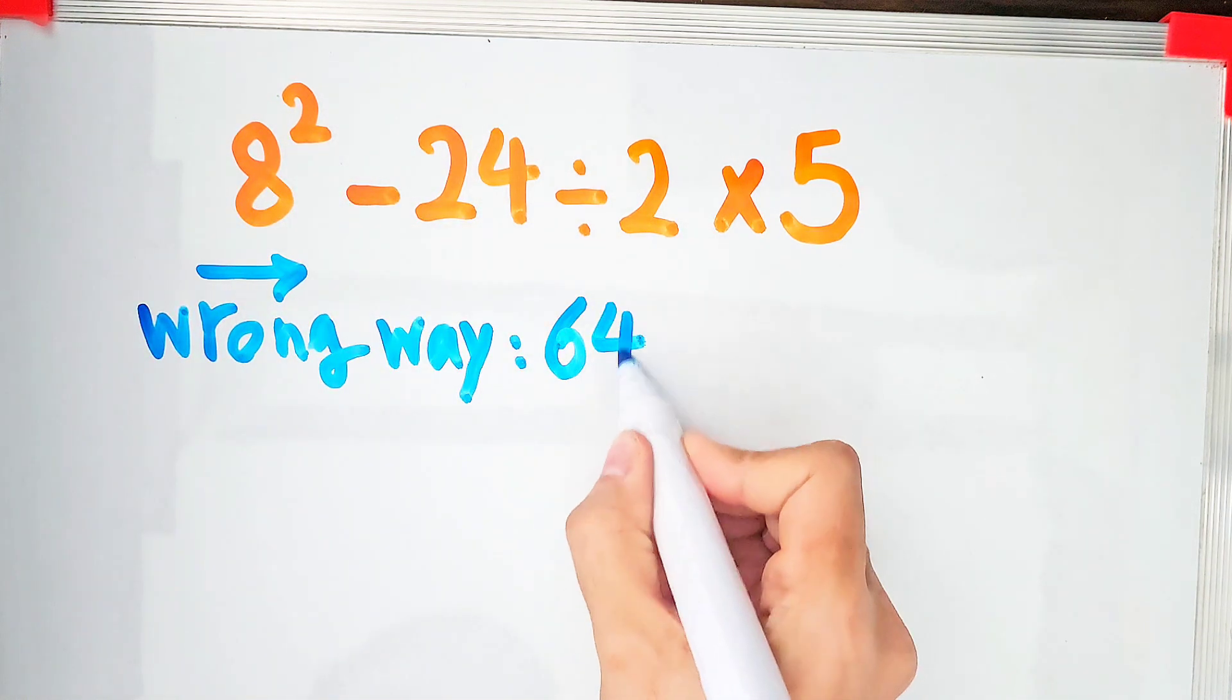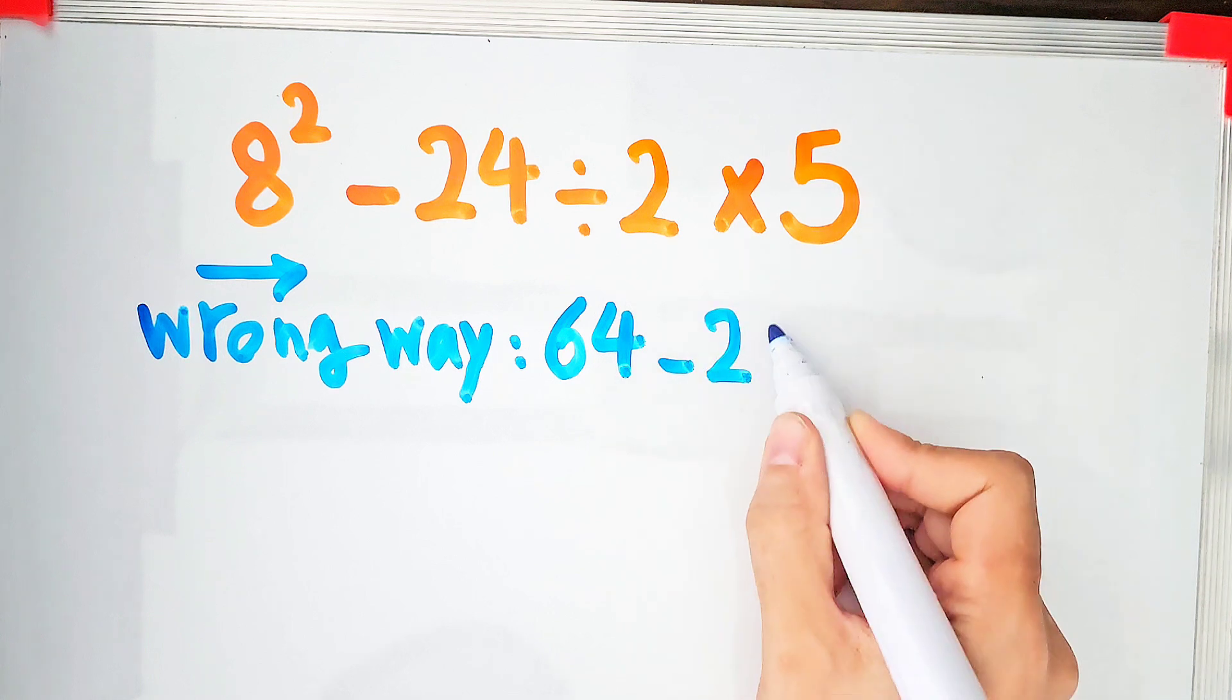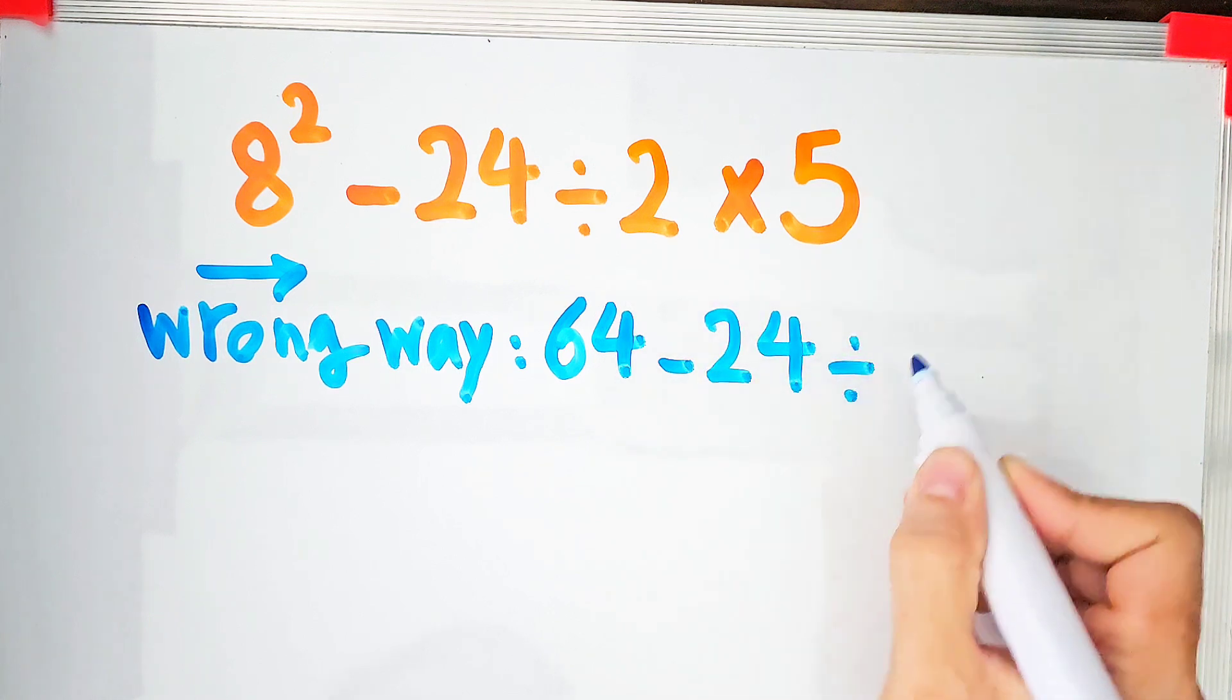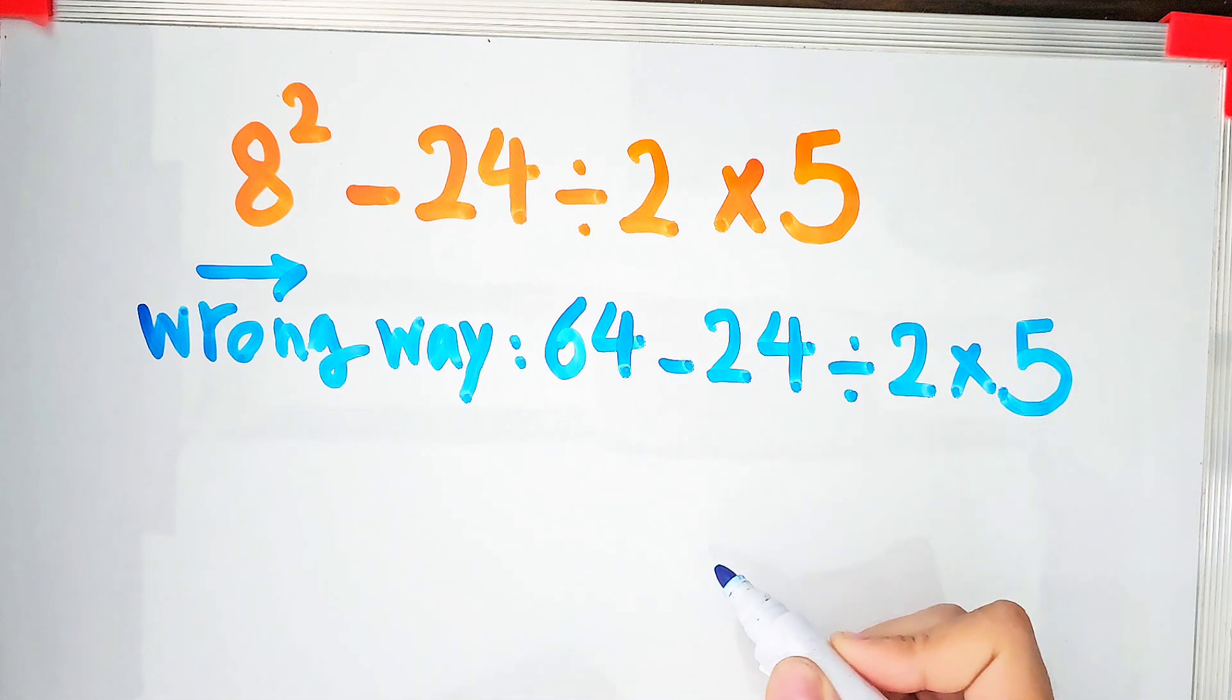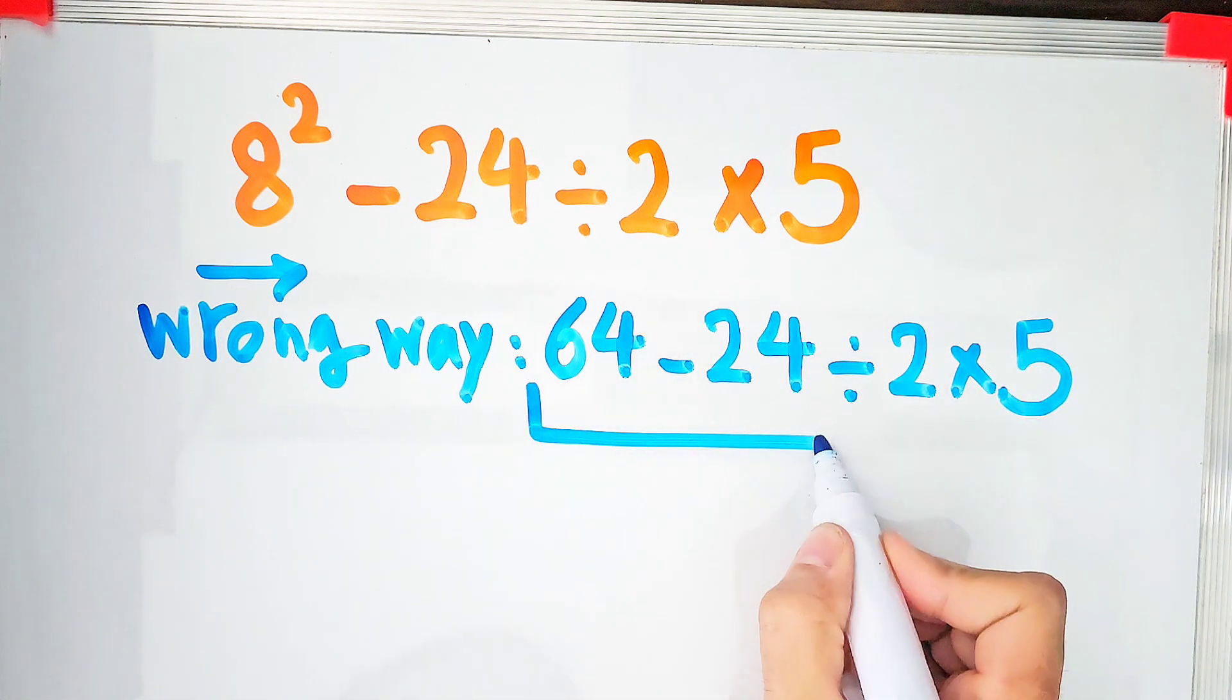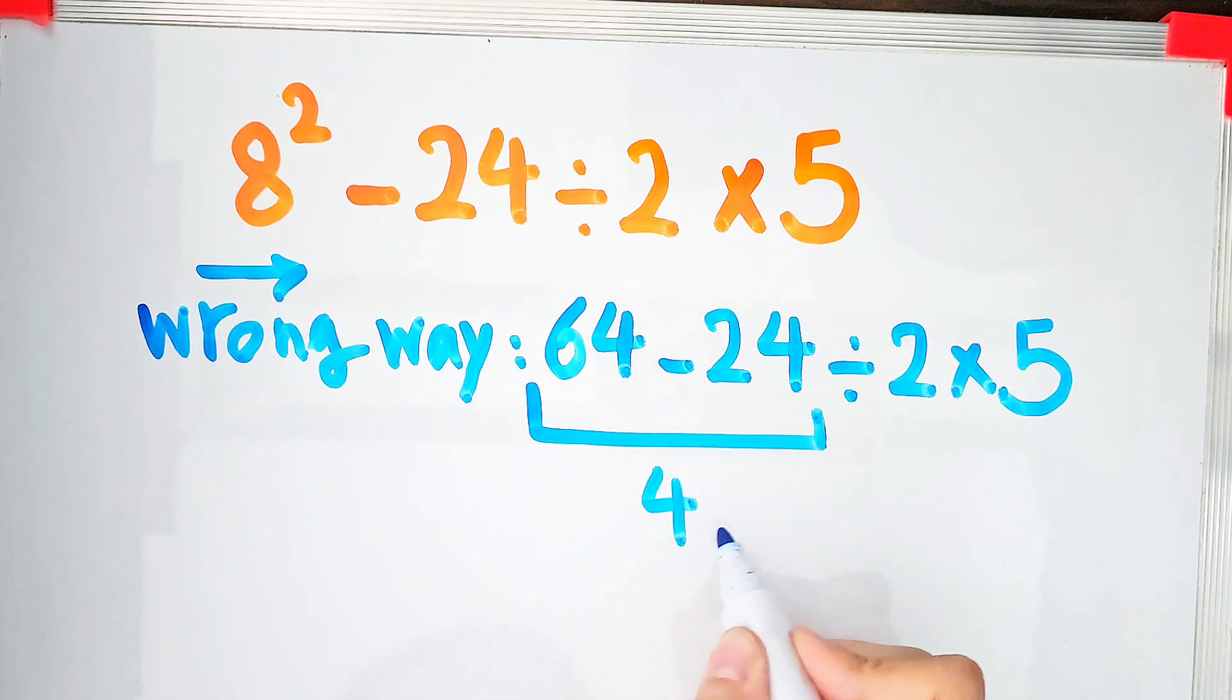8 to the power of 2 equals 64 minus 24 divided by 2 times 5. After that they simplify the first part: 64 minus 24 equals 40 divided by 2 times 5.